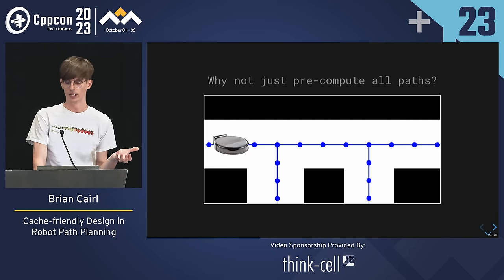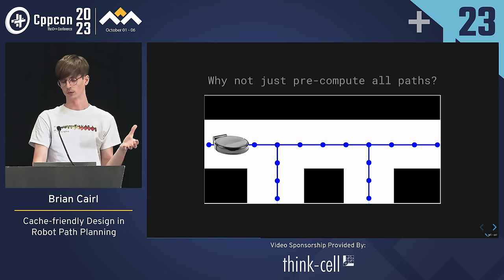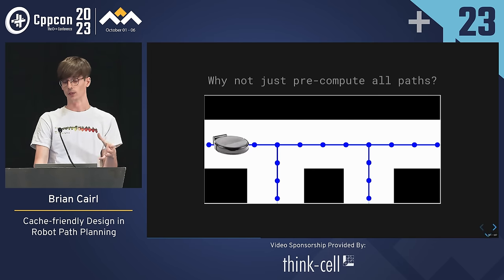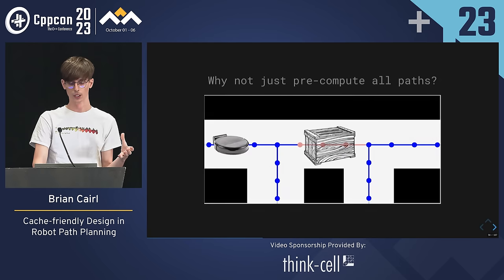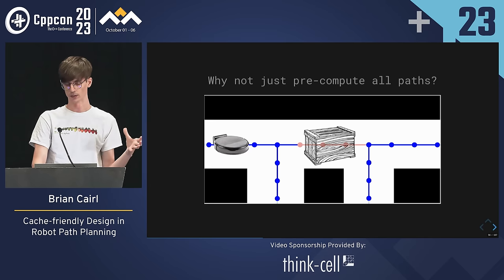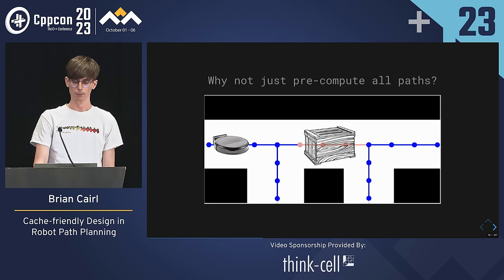Why not pre-compute all possible paths rather than run an online search? Probably the best we can do in terms of memory performance is load sequential blocks of data from memory — why not bypass the need for a complicated algorithm entirely? If it was simply a matter of traveling from vertex to vertex, we could probably get away with this even for relatively large graphs. But the environment is dynamic. As soon as edges become inaccessible due to blockages, the topology of our graph changes. So pre-computing every possible plan leads to a combinatorial explosion — it's just not possible.